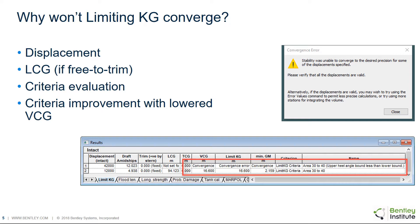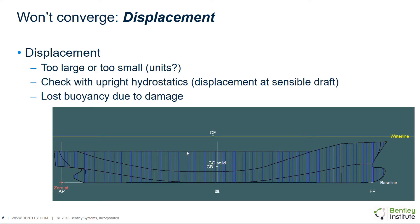The software assumes that lowering the VCG will improve the stability and make the criteria more likely to pass. If the analysis won't converge, the displacement might be too large, causing the vessel to sink. Check the vessel displacement with an upright hydrostatics calculation at a sensible draft. Also, bear in mind any lost buoyancy if a damaged case is being used.